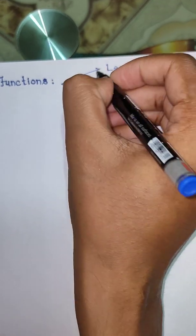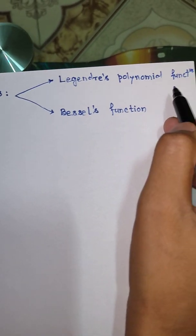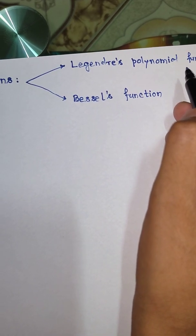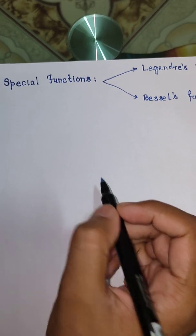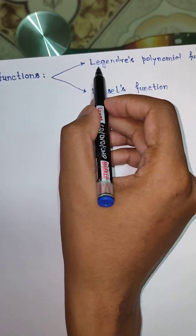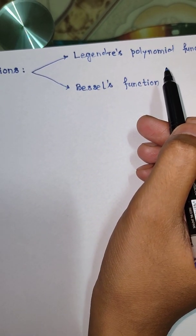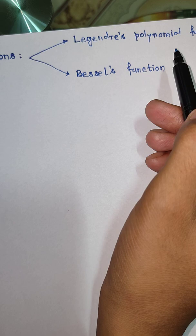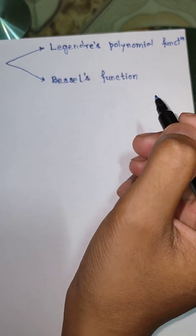In this learning video and in the upcoming learning videos, we are going to discuss about the Legendre polynomial function. Legendre polynomial functions are solutions to the Legendre equations. Now before we start with the Legendre differential equation, let me mention the wonderful applications of Legendre polynomial. It is widely used in the determination of the wave function of an electron in the orbits of an atom. Another application is in nuclear reactor physics, where Legendre polynomials have extraordinary importance.